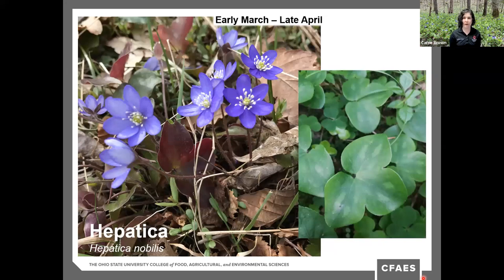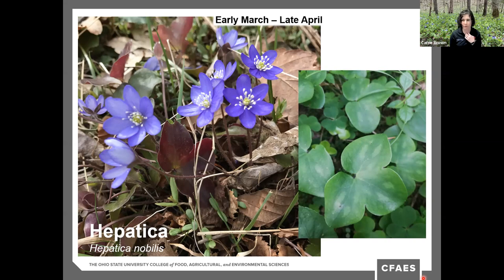Also known as liverwort, kidneywort, or pennywort, Hepatica is definitely a fan favorite. It's in the buttercup family and grows from a rhizome, so leaves and flowers emerge directly from the rhizome rather than from a stem above ground. The leaves are lobed, and the undersides can range from reddish to green in color. Over winter the leaves darken even more. Flowers are blue, purple, pink, or white — they produce pollen but there is no nectar reward for pollinators. The flowers attract sweat bees and small carpenter bees.